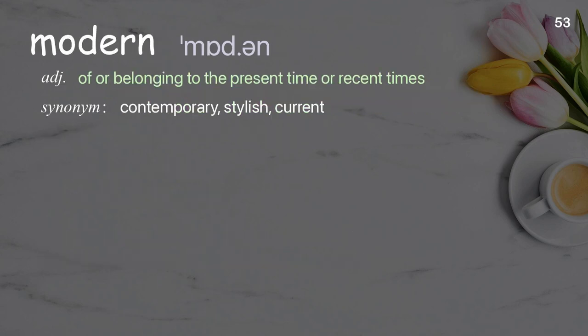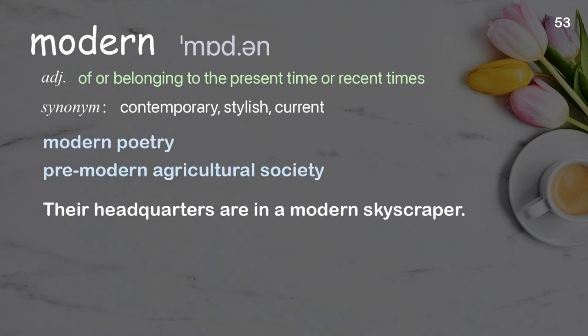Modern: of or belonging to the present time or recent times. Examples: modern poetry, premodern agricultural society. Their headquarters are in a modern skyscraper.